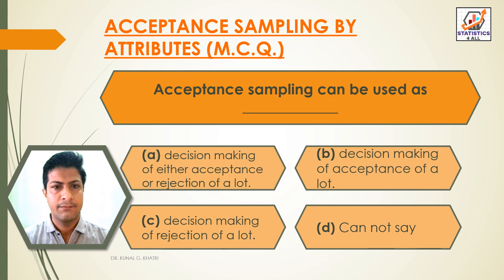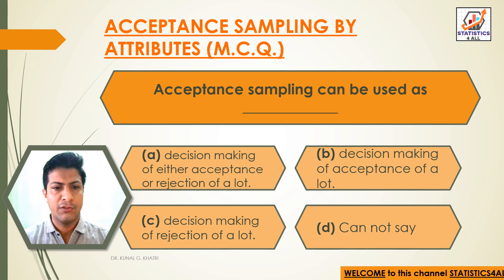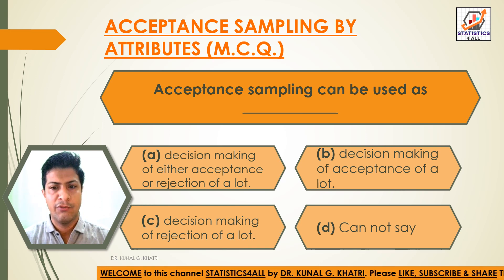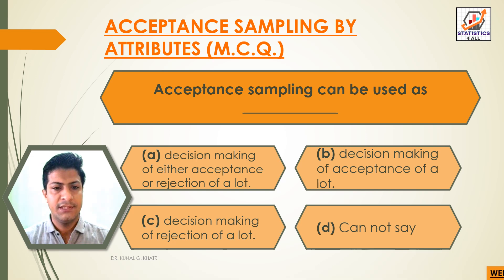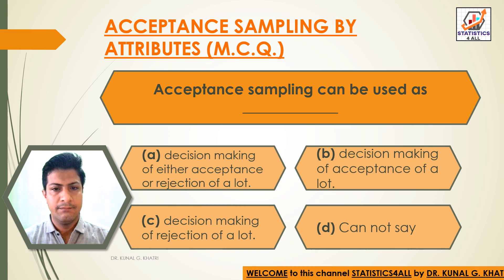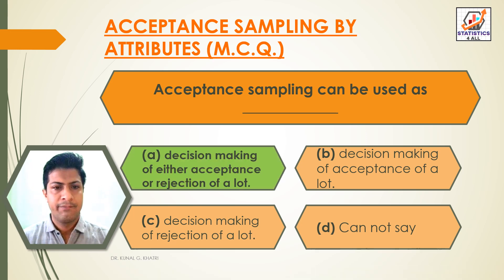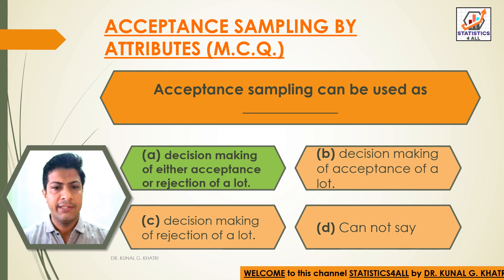Question 5: Acceptance sampling can be used as — Option A: decision-making of either acceptance or rejection of a lot. Option B: decision-making of acceptance of a lot. Option C: decision-making of rejection of a lot. Option D: Cannot say. The answer is Option A — decision-making of either acceptance or rejection of a lot.